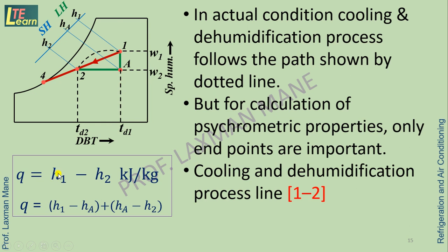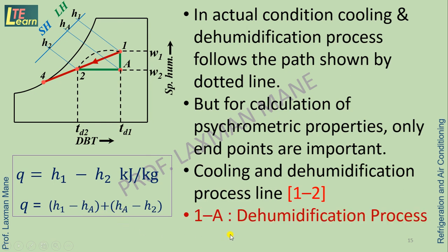The bypass factor represents the inefficiency of the coil. During cooling and dehumidification, the amount of heat removed is H1 − H2 (kJ/kg) total heat. This total heat has two parts: H1 − Ha is the latent heat part (vertical line), and Ha − H2 is the sensible heat part (horizontal line). So total heat is split into sensible heat and latent heat. In this case, process 1 to A represents dehumidification, and A to 2 represents cooling.